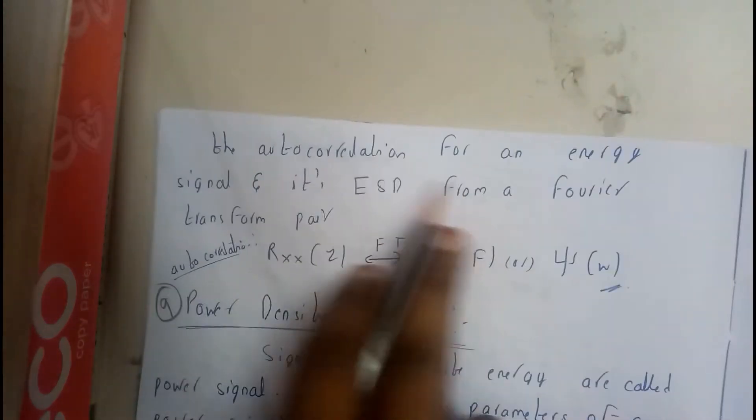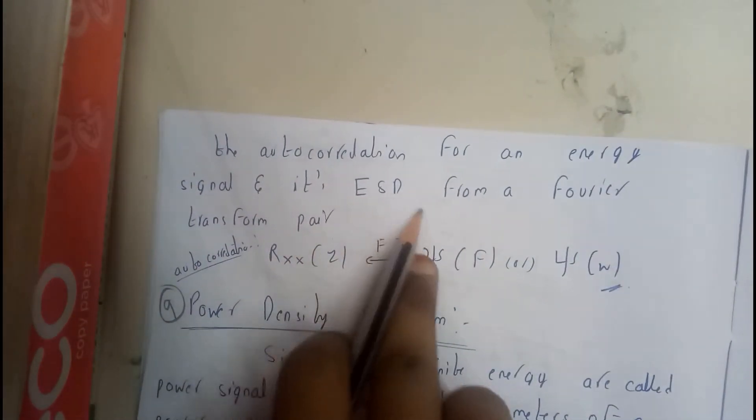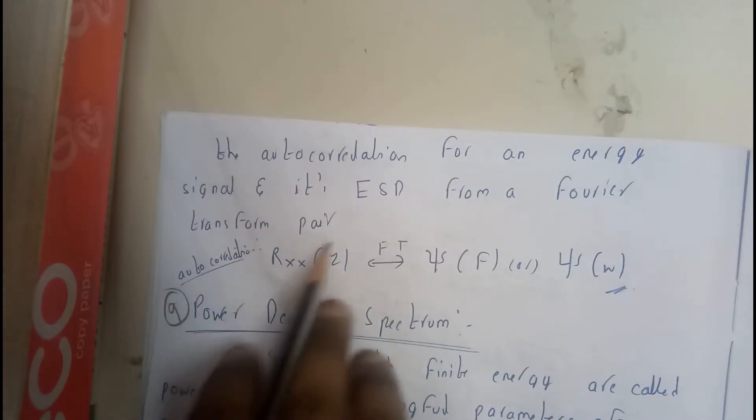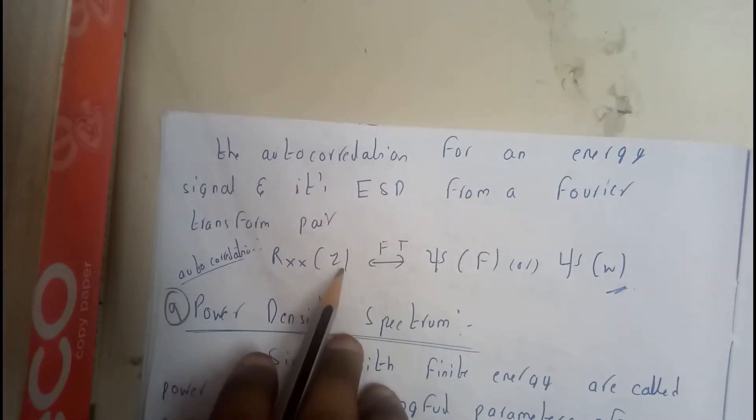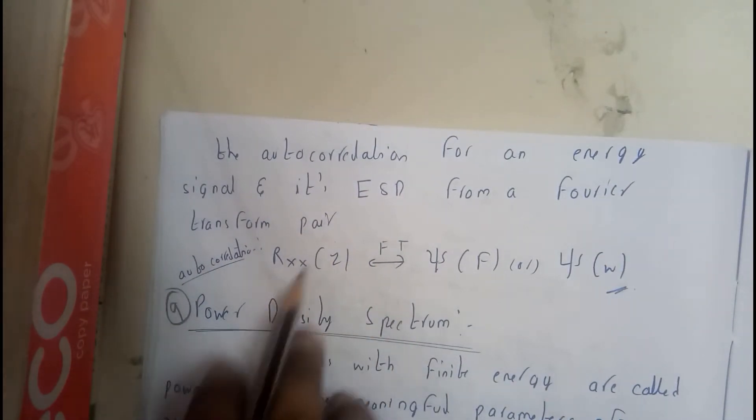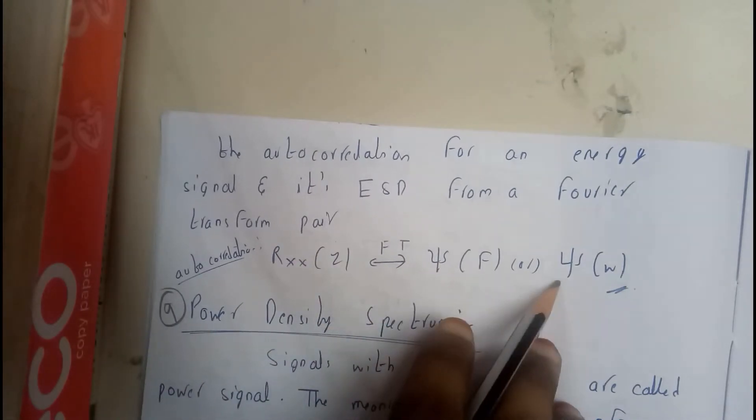Okay guys, so now I hope everyone got a small idea. So if it is in autocorrelation, the autocorrelation of an energy signal, it is ESD for a Fourier transform pair. Rxx of Z is for that Fourier transform is psi of F or psi of omega.